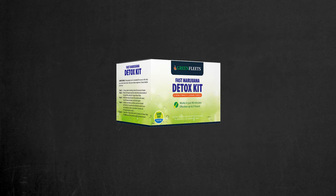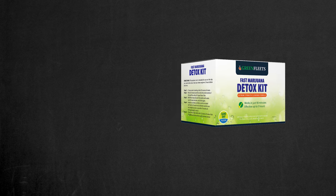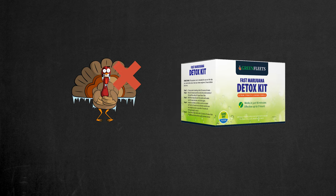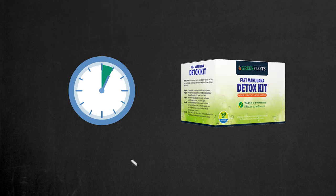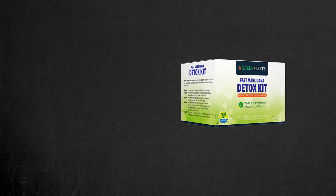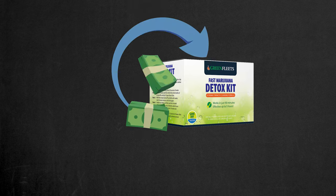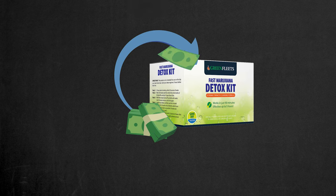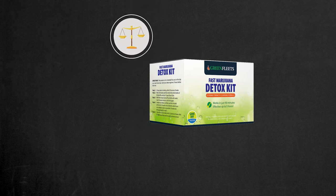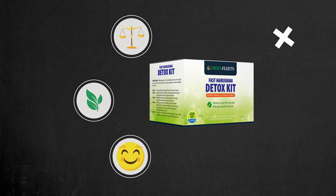Another way to flush THC out of your body is to use the Fast Marijuana Detox Kit from Green Fleets. The Detox Kit is the fastest way to pass a drug test without going cold turkey. It starts working in just 60 minutes and gives you up to 5 hours to pass your test. The kit includes the products with all the required ingredients to pass your test with flying colors. It also comes with a money back guarantee. The kit is legal, safe and not detectable by the labs.